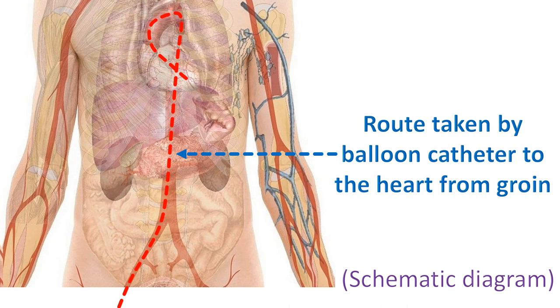Still another way is to create transfemoral access by doing intravascular lithotripsy for diseased and calcified femoral arteries in this elderly population.